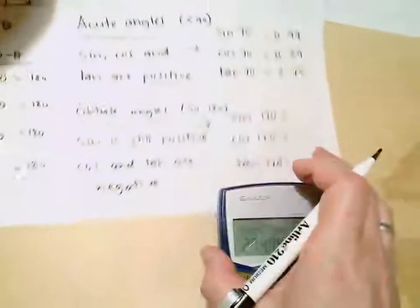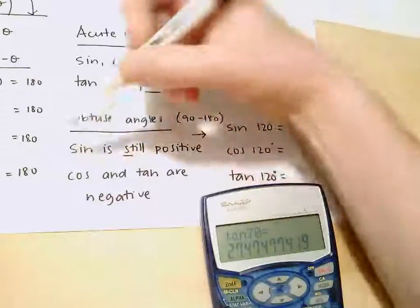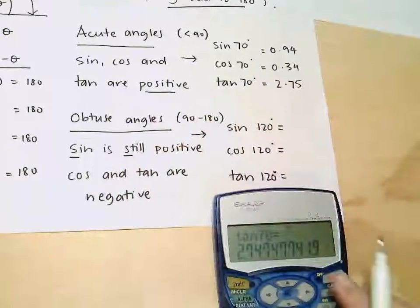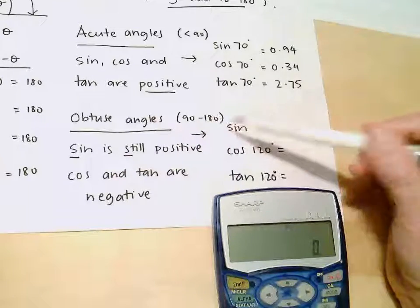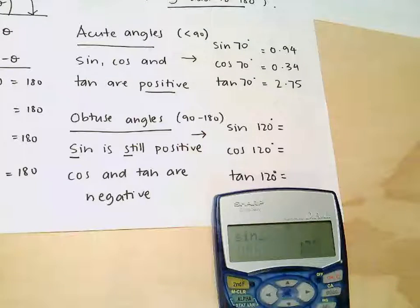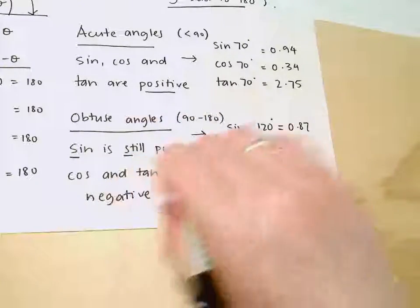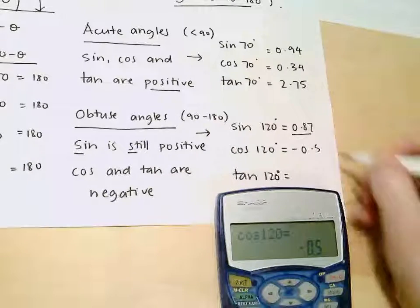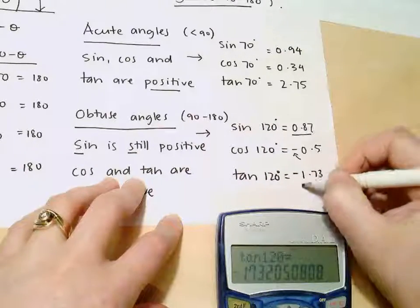We're going to start now working with obtuse angles, and we're going to find that this isn't the case. Sine is going to still be positive — you can remember because sine starts with S, and 'still' starts with S. So sine stays positive, but we're going to find that cos and tan give negative values. For example, 120 degrees is an obtuse angle: sine of 120 gives 0.866, so sine is still positive. But cos of 120 gives negative 0.5, and tan of 120 also gives a negative value.